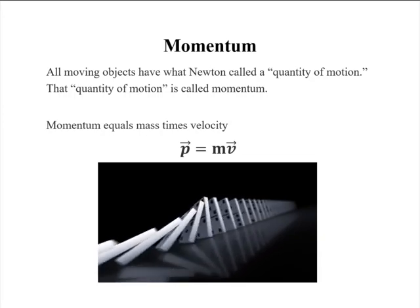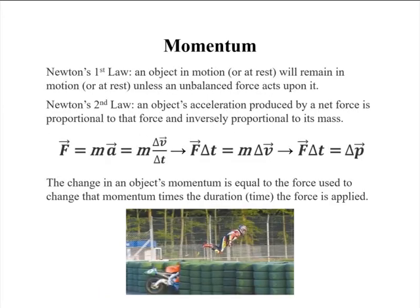You have to pay attention to the directions. If we think back to Newton's laws, in his first law, an object in motion or at rest will remain in motion or at rest unless an unbalanced force acts upon it. And in Newton's second law, an object's acceleration produced by a net force is proportional to that force and inversely proportional to its mass. So if we think of F equals MA, and remember that A, the acceleration, is just the change in velocity divided by the change in time, then do a little bit of rearranging.